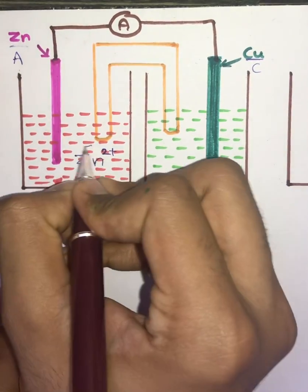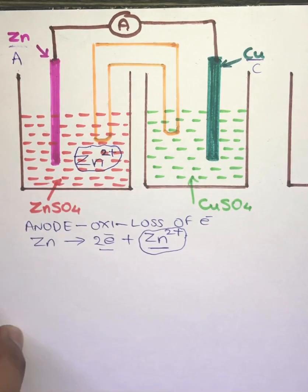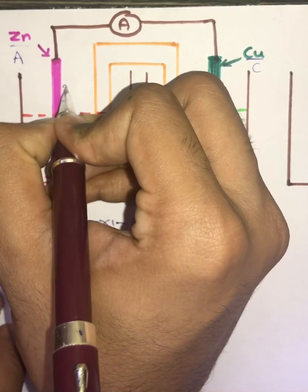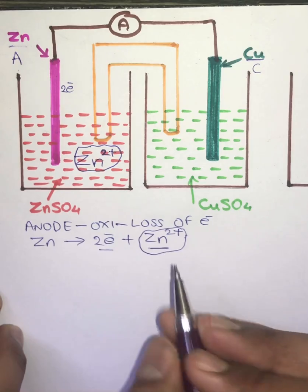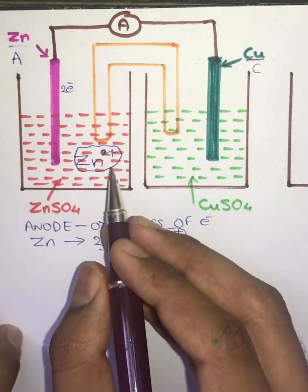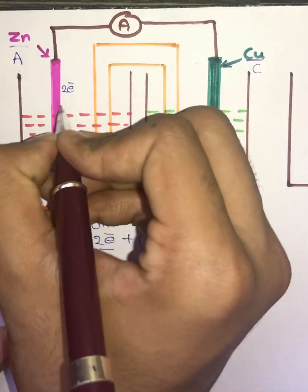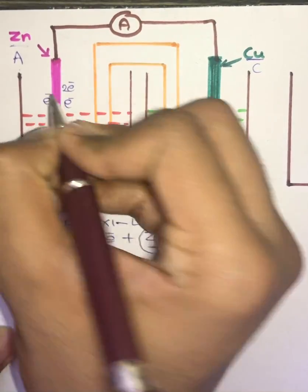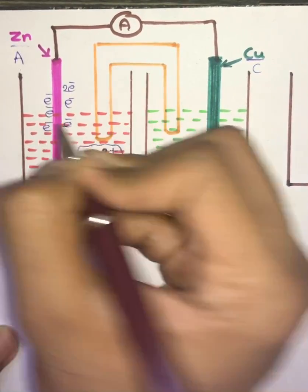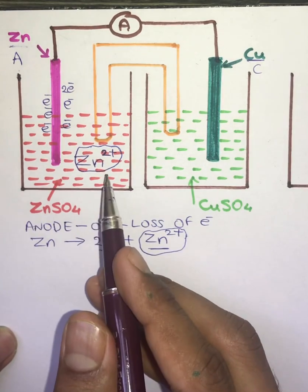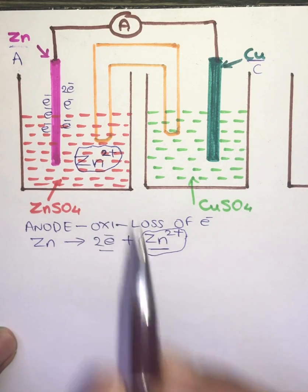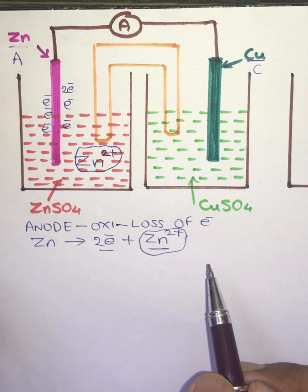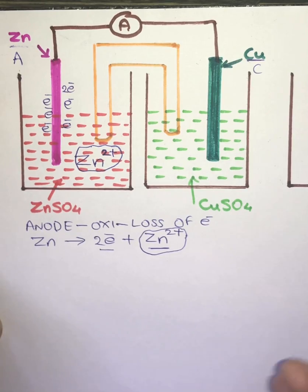The Zn2+ ions go into the electrolytic solution, and the two electrons get accumulated on the electrode. In this way, many atoms get dissociated into Zn2+ ions and two electrons, so there will be lots of electrons at this electrode and many ions in the electrolytic solution. Since Zn2+ is positively charged, the electrolytic solution becomes positive.